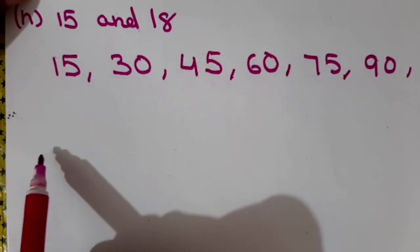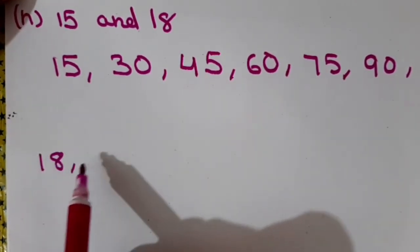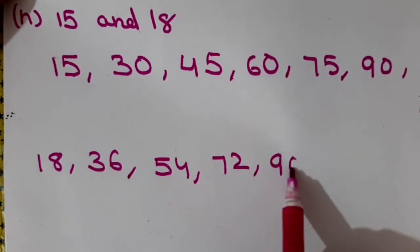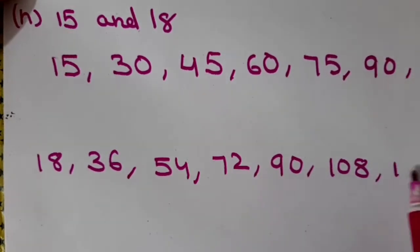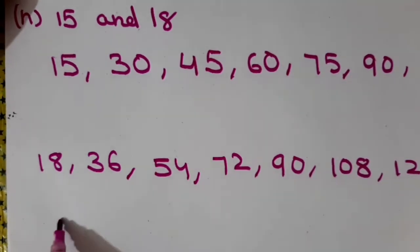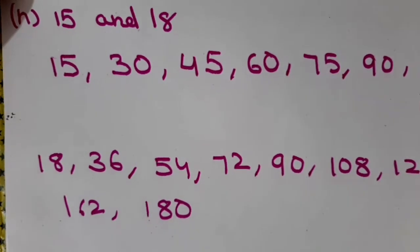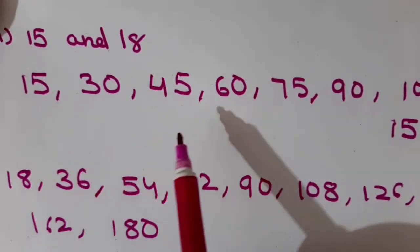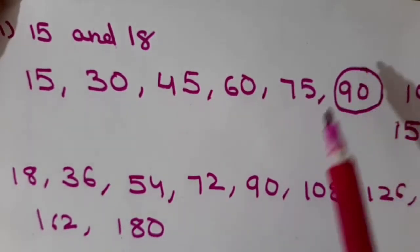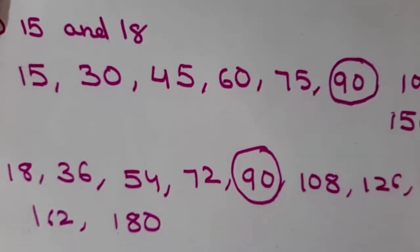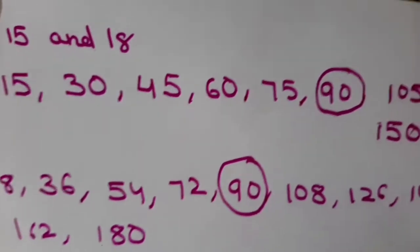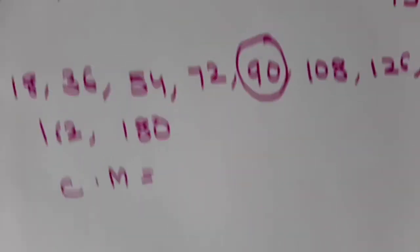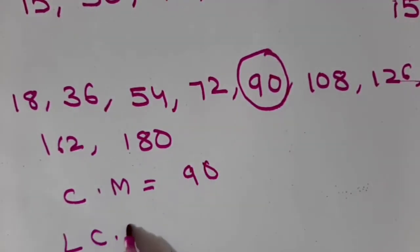Now I will write the multiples of 18: 18, 36, 54, 72, 90, 108, 126, 144, 162 and 180. Now let us find out the common multiple. I can see 90 is here in both lists. So I have got only one common multiple within the first ten, which is 90. So LCM is also 90.